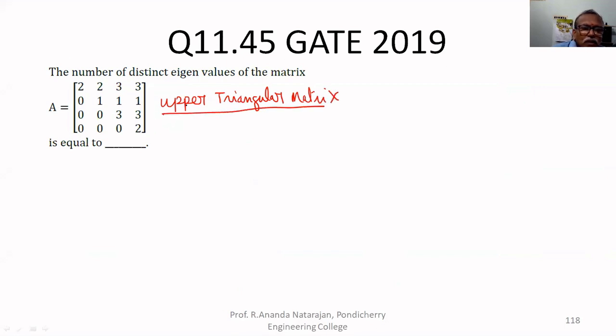Therefore eigenvalues are the diagonal elements. The diagonal elements are eigenvalues, therefore eigenvalues equal to 2, 1, 3, 2.